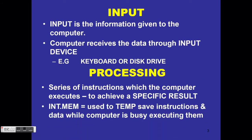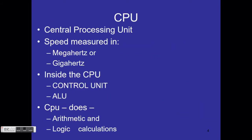Internal memory is used to temporarily save instructions and data while the computer is busy executing them. This happens in the CPU — the full term being central processing unit. Its speed is measured in either gigahertz or megahertz.